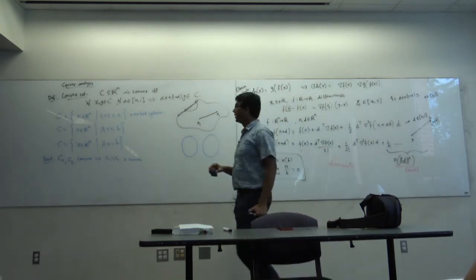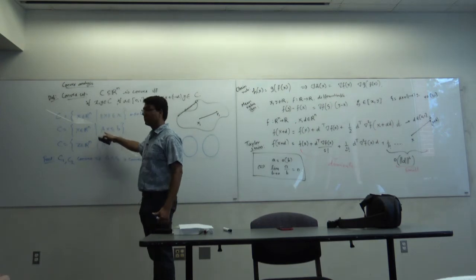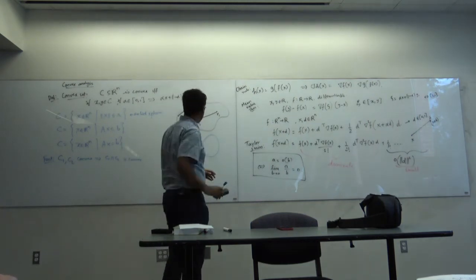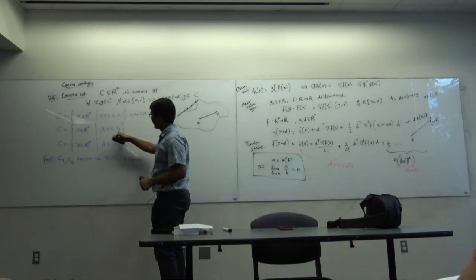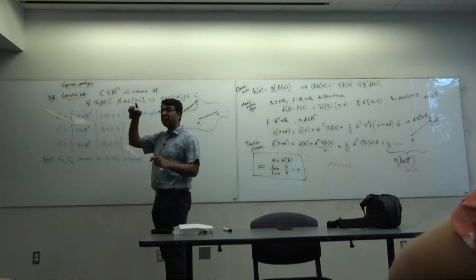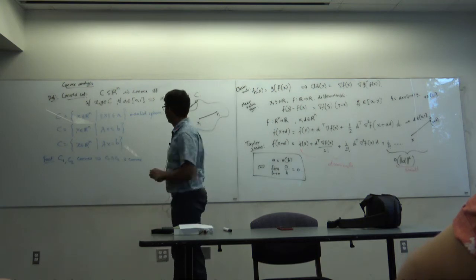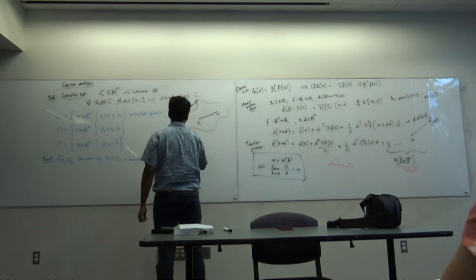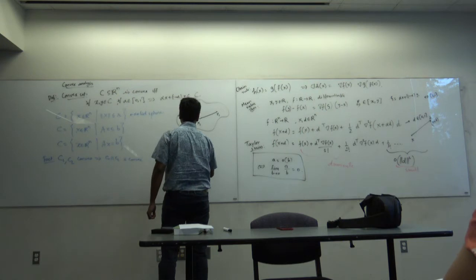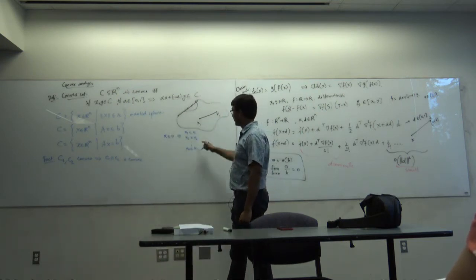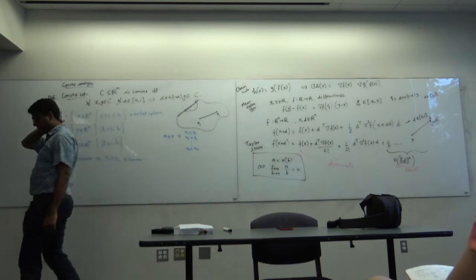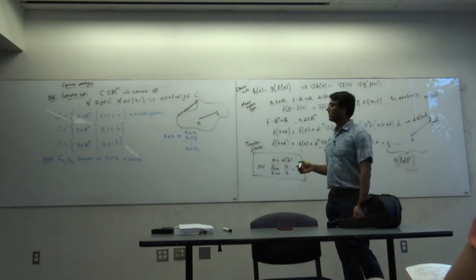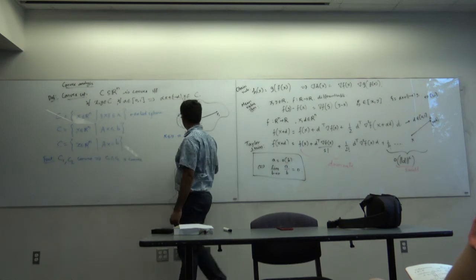A student asks about the notation A and b. When I say a vector is less than or equal to another vector, it means element-wise: x ≤ y means x_1 ≤ y_1, x_2 ≤ y_2, ..., x_n ≤ y_n. This is known as lexicographic ordering, and most papers on optimization use this notation.